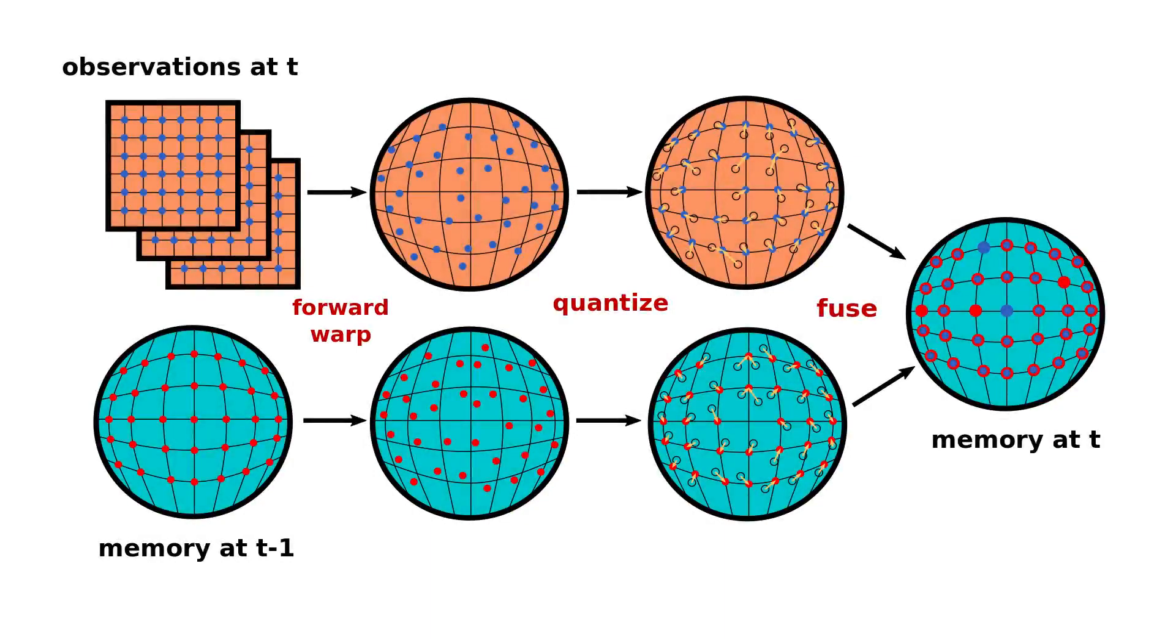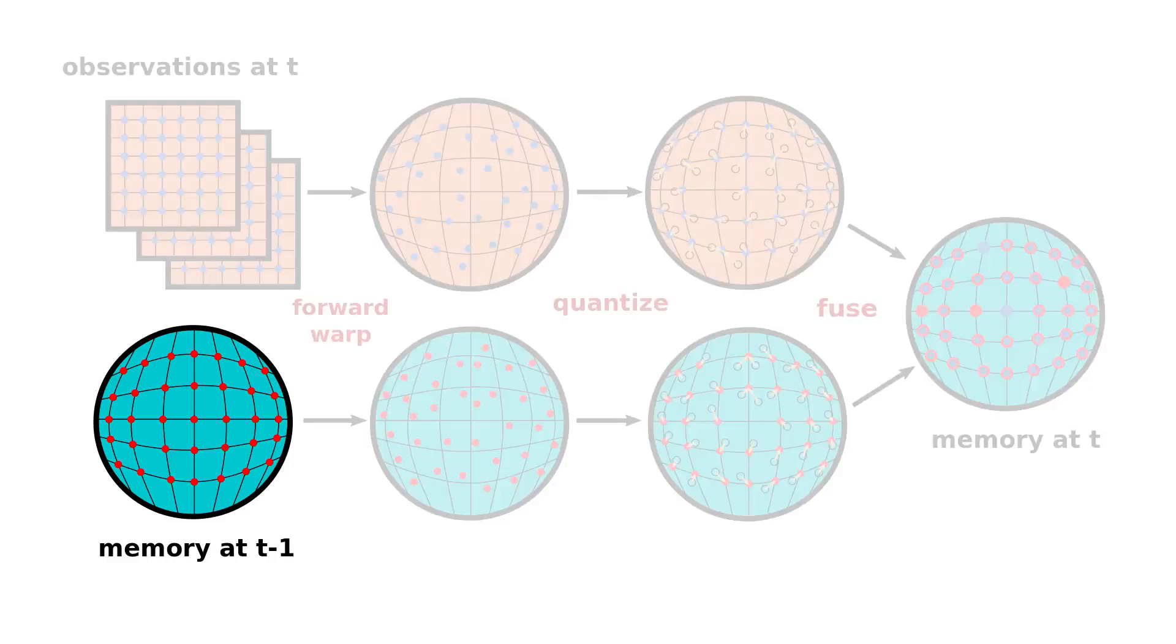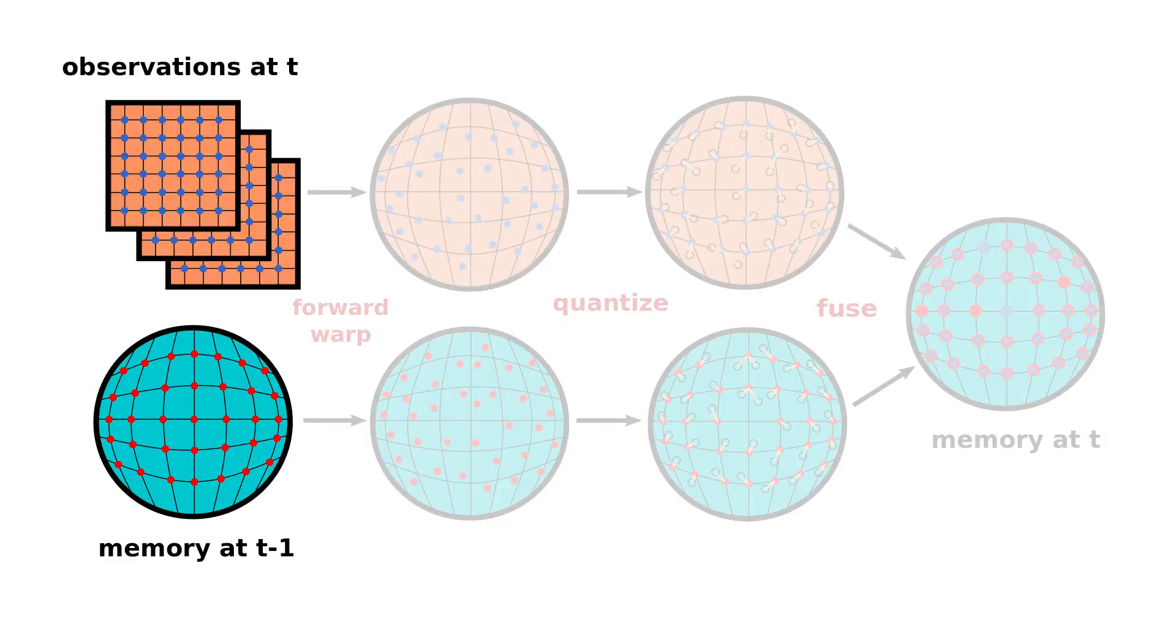ESM involves no learnable weights, and instead relies on forward warp reprojections for updating the memory on each time step. We start with the memory at time t-1, and we also have new image observations at time t.